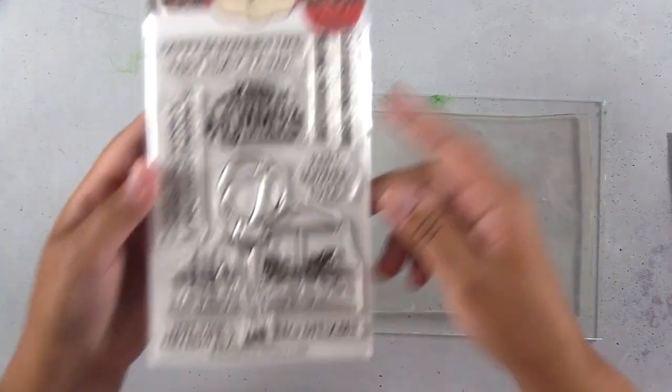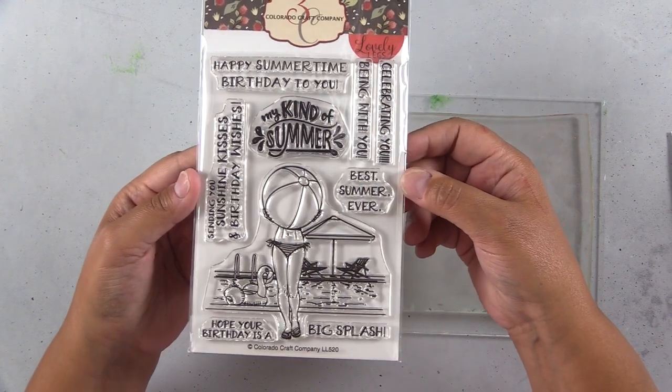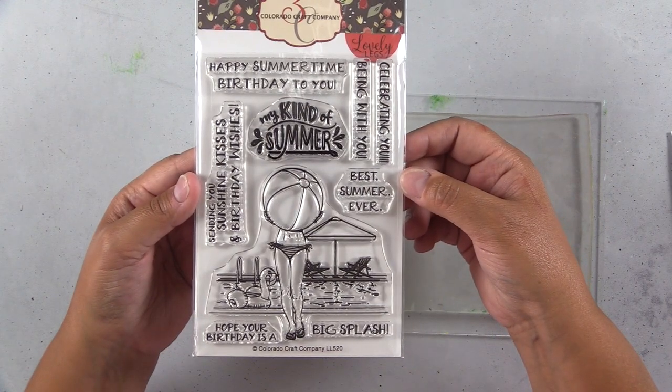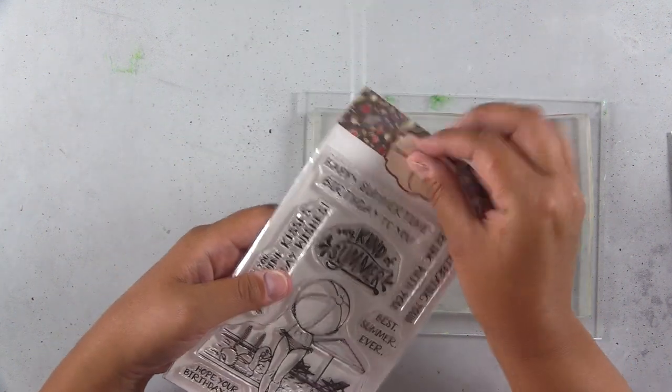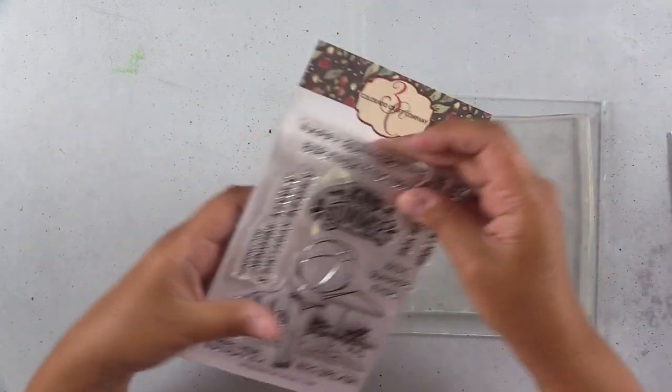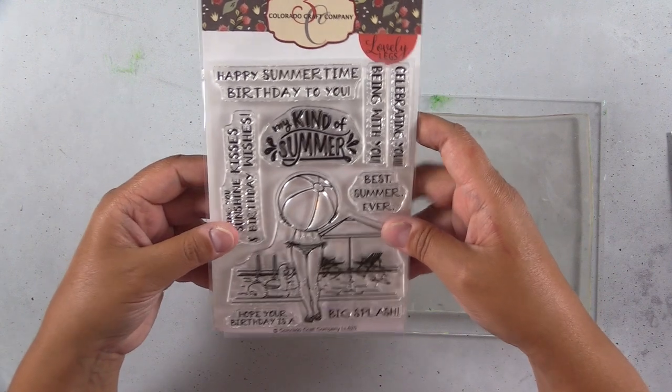I'm looking at Summertime Birthday from Colorado Craft Company and figuring out how I want to create my scene. I see that I'm going to need the water in the pool, the sky, and then also the pool deck for her to stand on, so I'm going to need three different areas in my gel press print.